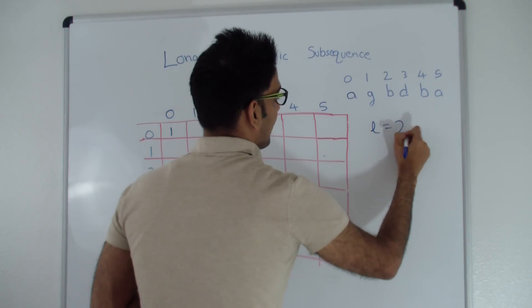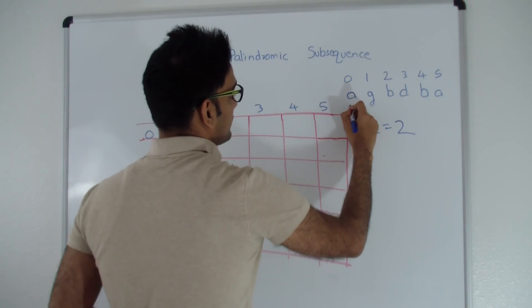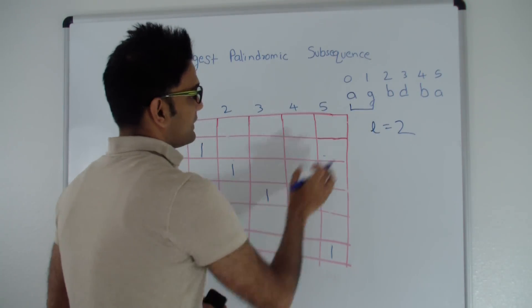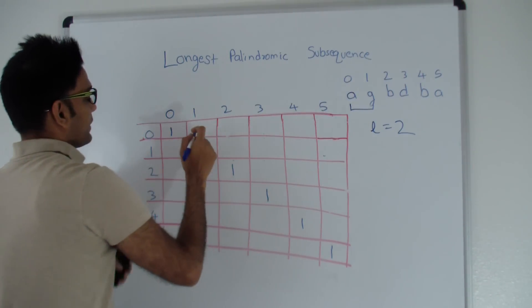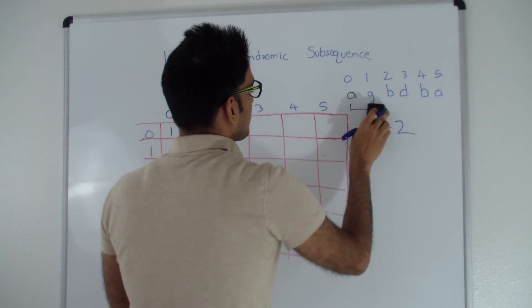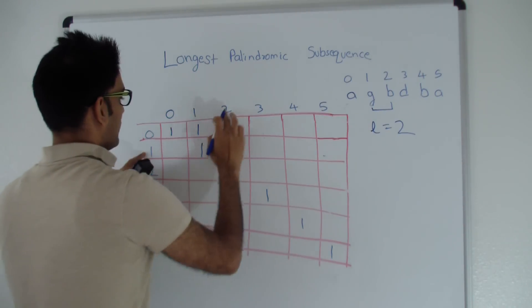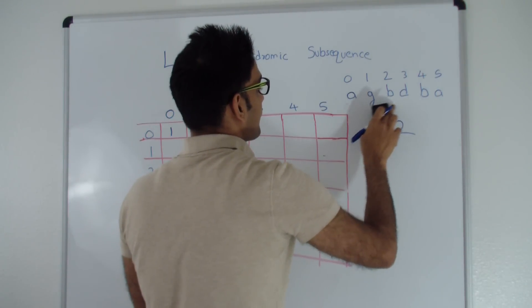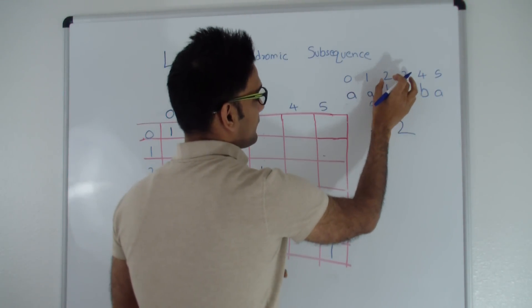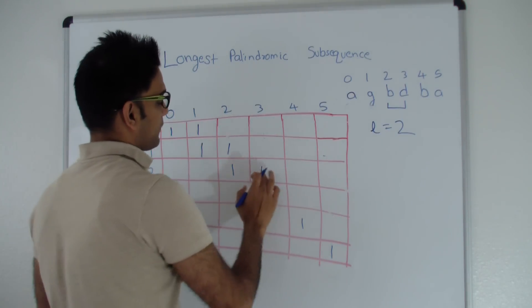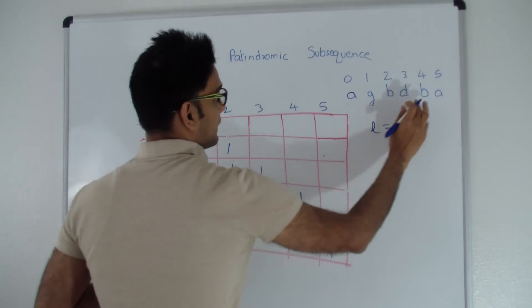Let's move on to length 2, considering 2 characters at a time. If we consider A and G together — since they are not the same — the longest palindromic subsequence is of length 1, so cell 0,1 is filled with 1. Similarly, G and B are not same, so cell 1,2 is 1. B and D are not same, so cell 2,3 is 1. D and B are not same, so cell 3,4 is 1. And B and A are not same, so cell 4,5 is 1.